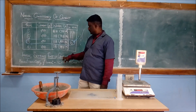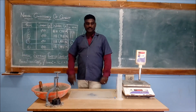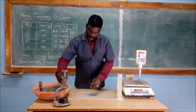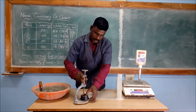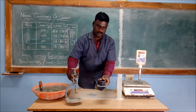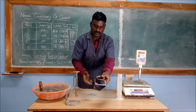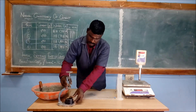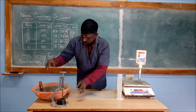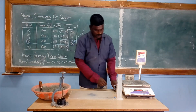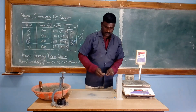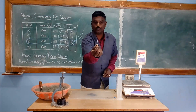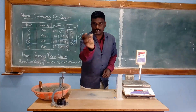We are going to see how we will do the experiment. This is the Vicat apparatus, and this is the Vicat mold. This is the plunger, which is of 1 mm square.